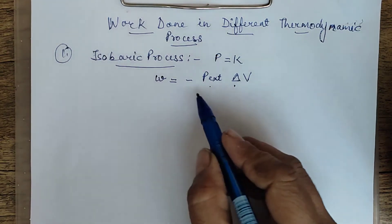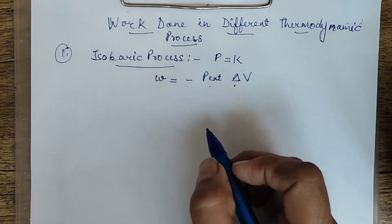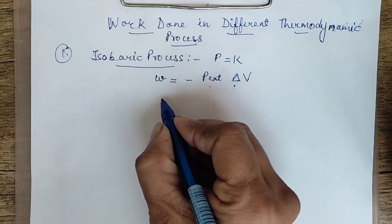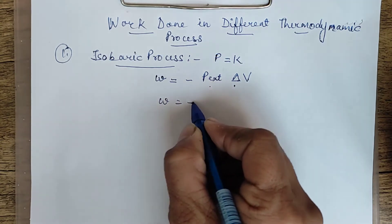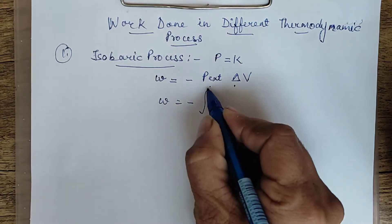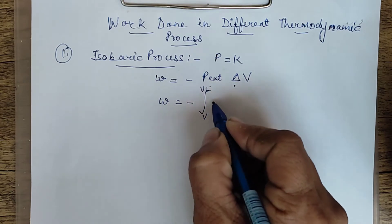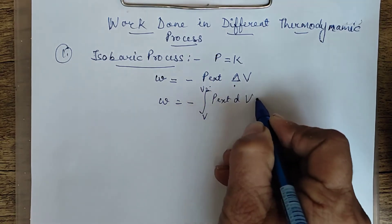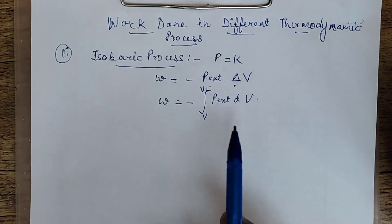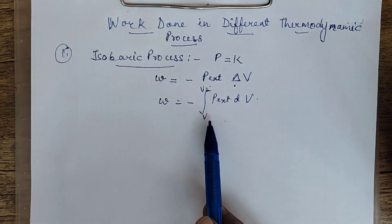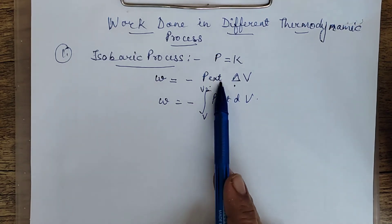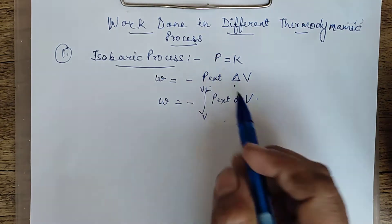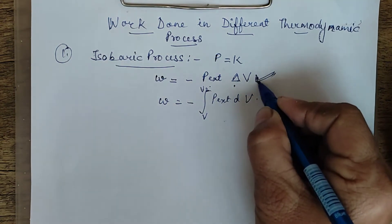In case the pressure is not kept constant, you calculate work done by another formula: W = -∫(V1 to V2) P_external dV. This formula is used only when the pressure is changing. In isobaric process the pressure is not changing, so we will only use the simple formula W = -P_external × ΔV.